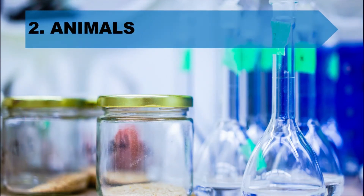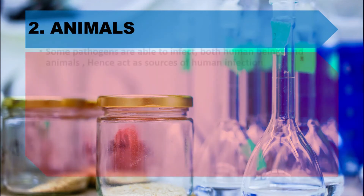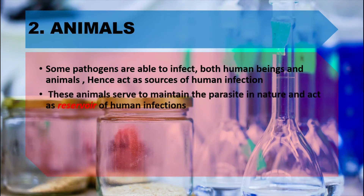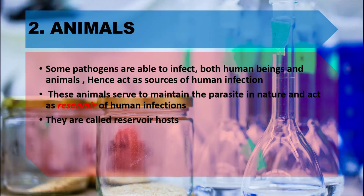Now we come to the next source of infection — animals. Some pathogens are able to infect both human beings and animals, so animals can act as a source of human infection. These animals serve to maintain the parasite in nature and act as a reservoir of human infection. They are called reservoir hosts because they constantly harbor the pathogen and are able to transmit it to humans at any time.